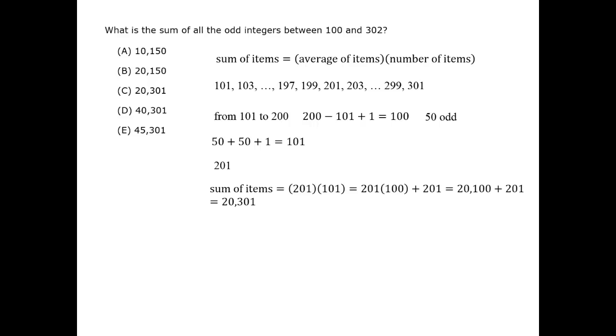Therefore, the sum of items is the average times the number of numbers, 201 times 101, or 20,301. The correct answer is C.